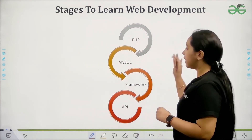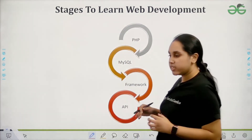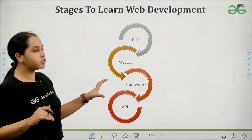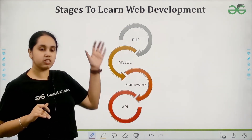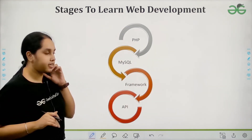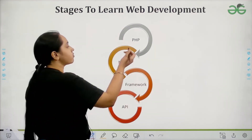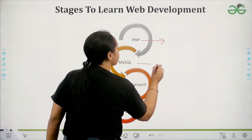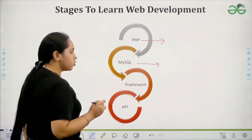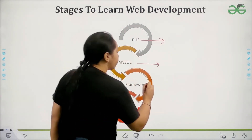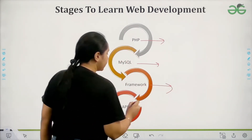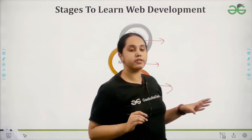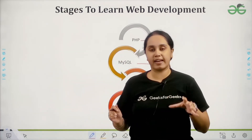After completing front end, move to back end. In the back end, first go for PHP, then MySQL, then frameworks, and then APIs. This is the recommended order for back end development.